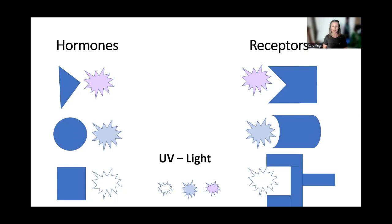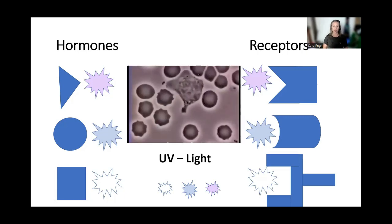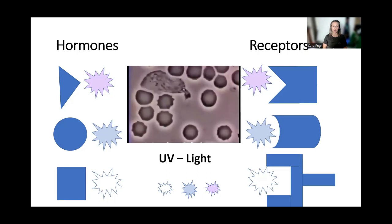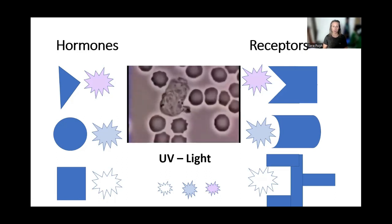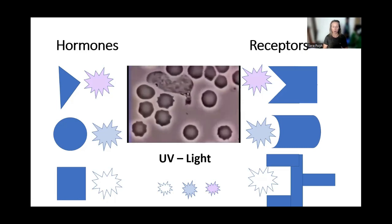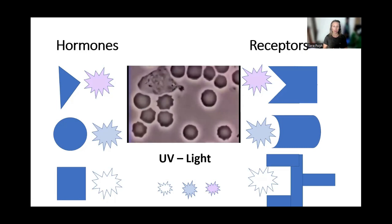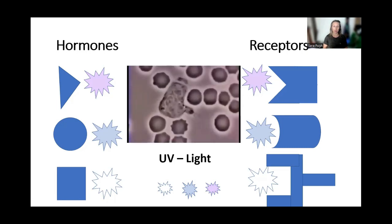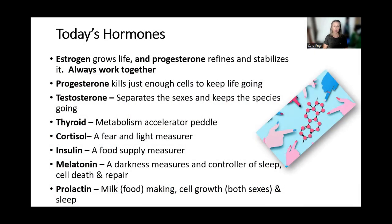This video shows an immune cell chasing a bacteria around the body. The immune cell doesn't have eyes and can't smell, so how does it know where the bacteria is? This relates to light: bacteria emit about 50 to 100 times more light than our cells, so the immune system uses that light signal to chase and engulf bacteria to protect us.